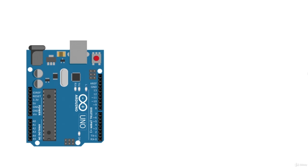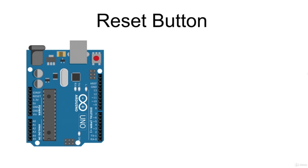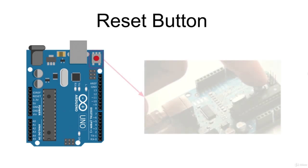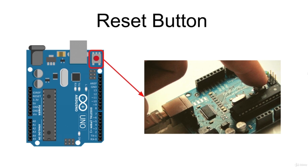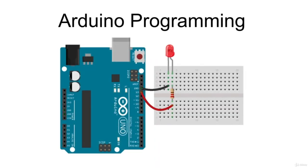Finally, the reset button. The board has a reset button that can be used to restart our program from the very beginning. Each time this button is pressed, the Arduino restarts your code from the first instruction. In the next lectures, we will discover how to use the Arduino programming language to use the Arduino pins and to write simple codes.